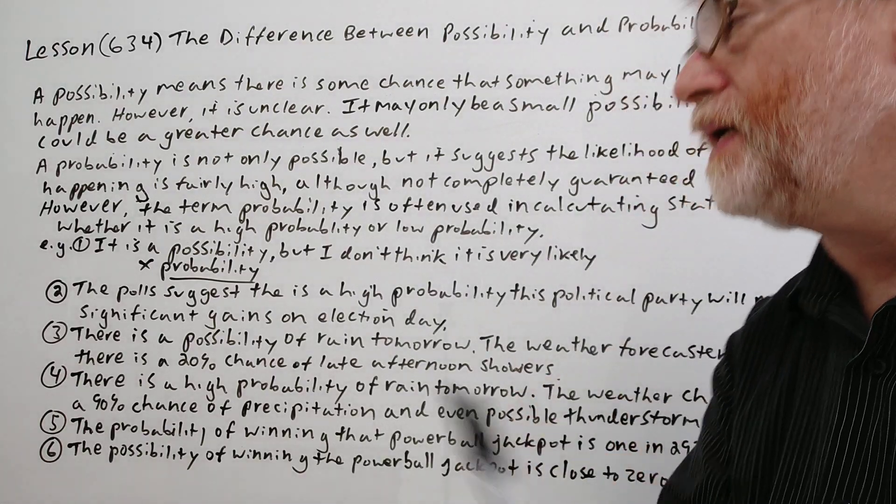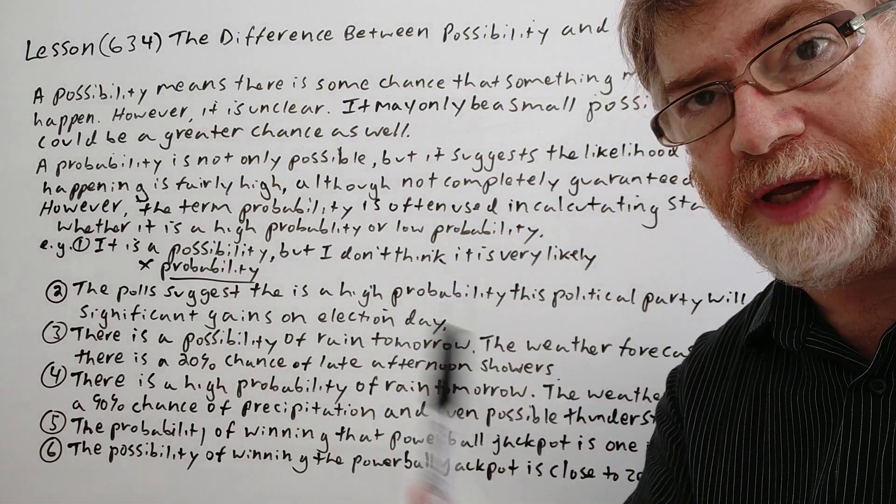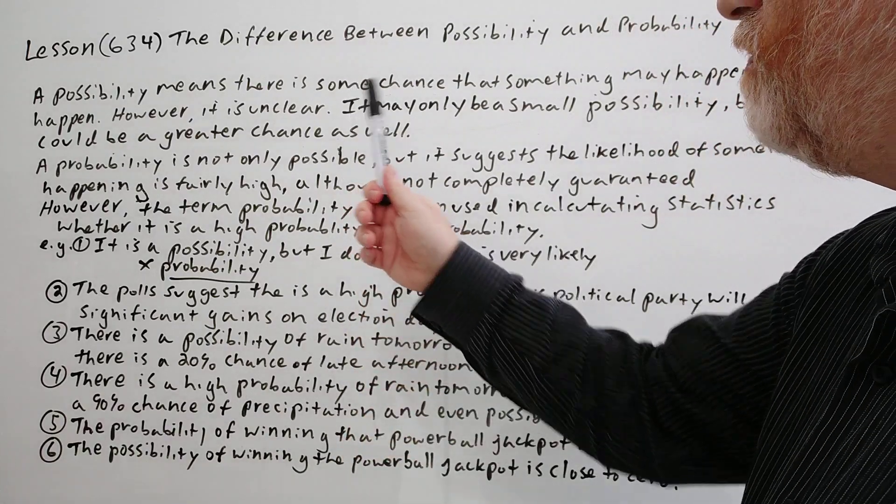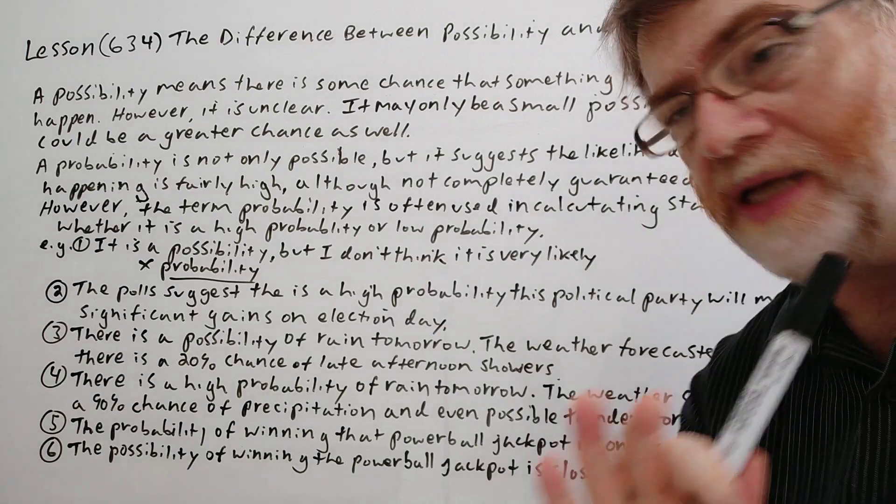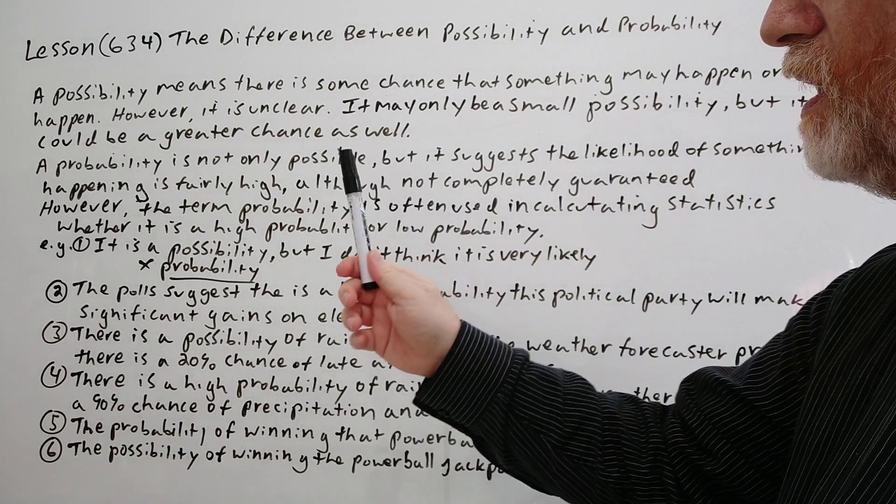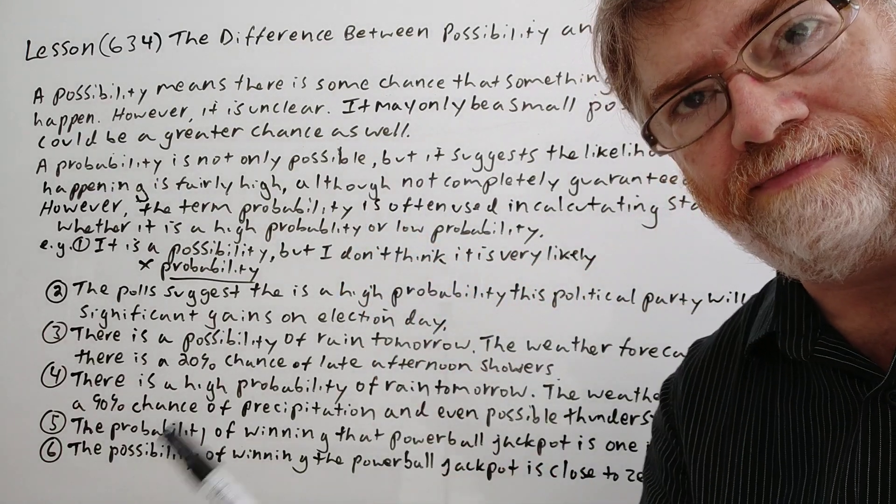A possibility means there is some chance that something may happen or could happen. However, it is unclear. It may only be a small possibility, but it could be a greater chance as well.